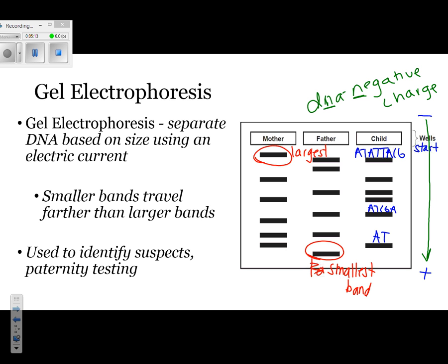We use gel electrophoresis to identify suspects and to do different types of paternity testing.